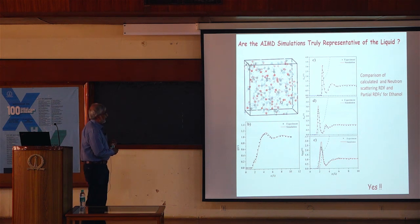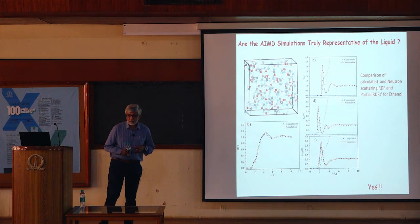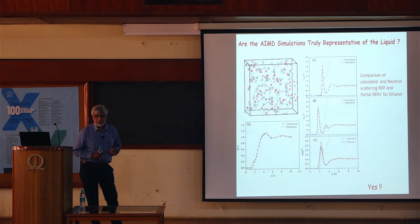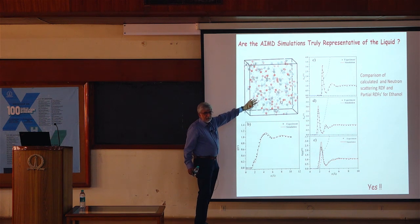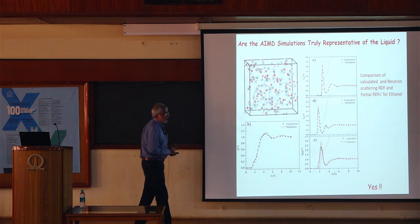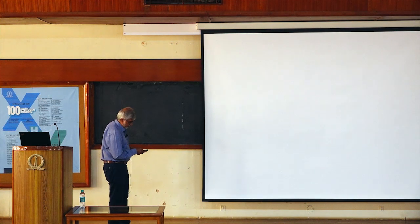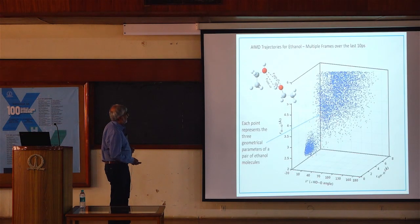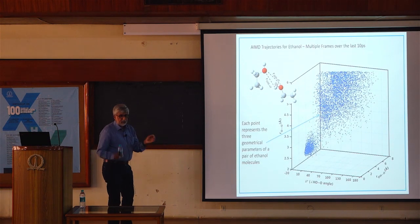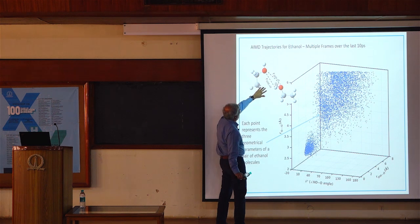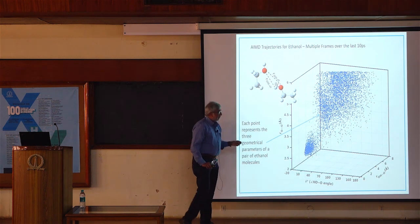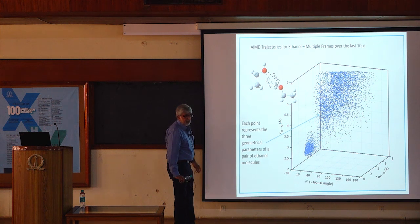What we do next is derive geometrical information about the hydrogen bond by looking at pairs of molecules in our ensemble. For ethanol, we take a pair of ethanol molecules and for each pair we measure the distances R_HO, R_OO, the O–H–O angle, and this angle. Each point in the scatter plot represents these three coordinates.